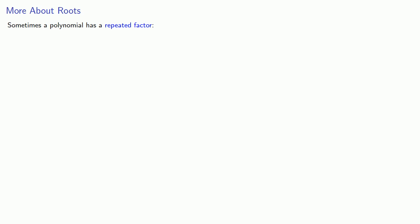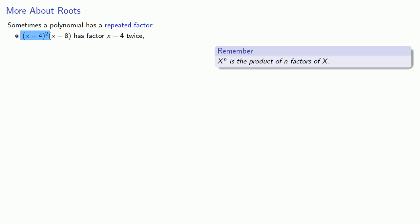Sometimes a polynomial has a repeated factor. Remember, when you see an exponent, that means that you have that many factors of whatever the base is. So here this exponent of 2 says that x minus 4 appears as a factor twice, while this polynomial has the factor x squared plus 2x plus 8 five times.